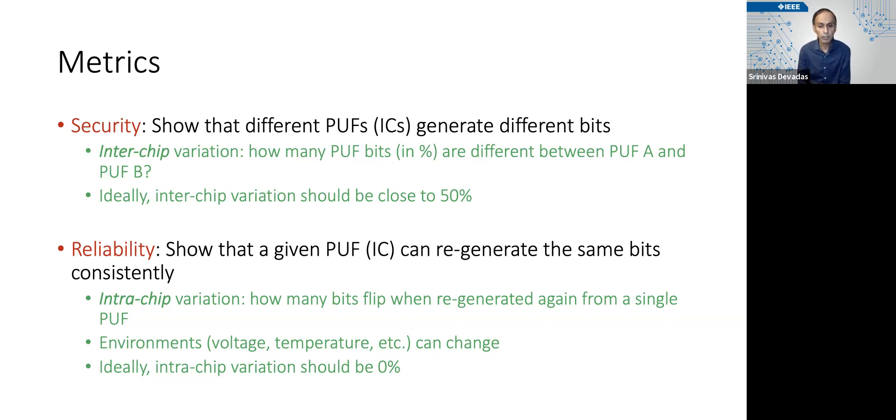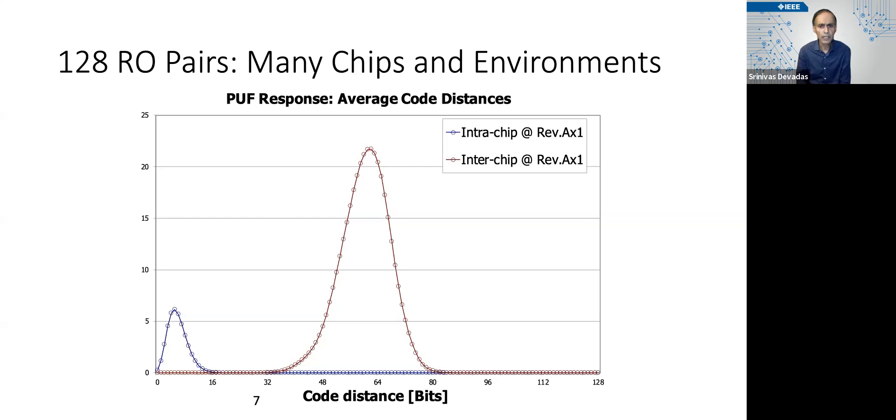And it's entirely possible that a pair produces a one from a given chip and produces a zero at a different time.